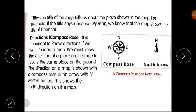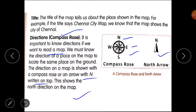The first element is title. The title of the map tells us about the place shown in the map. For example, if the title says 'Chennai City Map', we know that the map shows the city of Chennai. Next is direction — the compass or compass rose. It is important to know directions if we want to read a map. We must know the direction of a place on the map to locate it on the ground. The direction on a map is shown with a compass rose or an arrow with N written on top. This shows the north direction. Then east, south, and west follow accordingly.